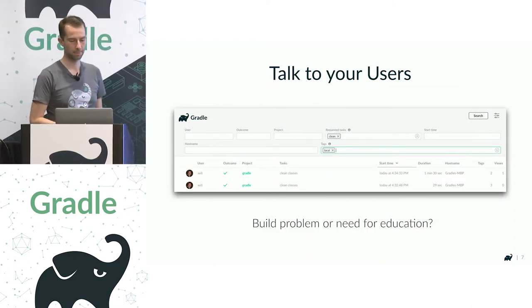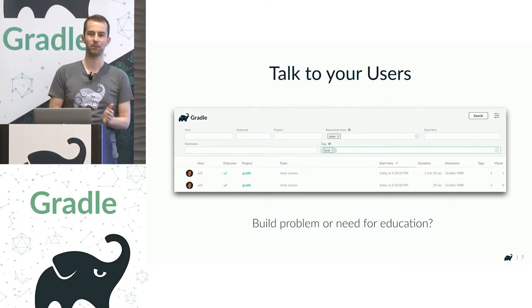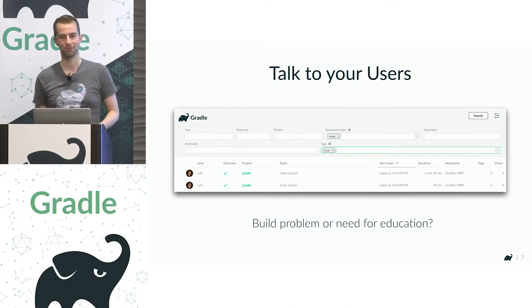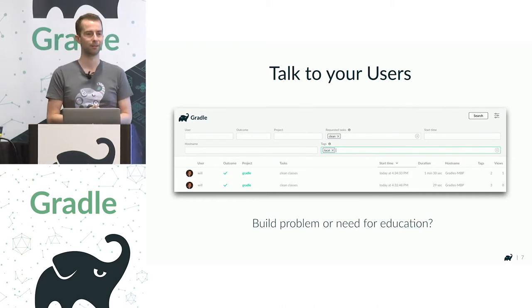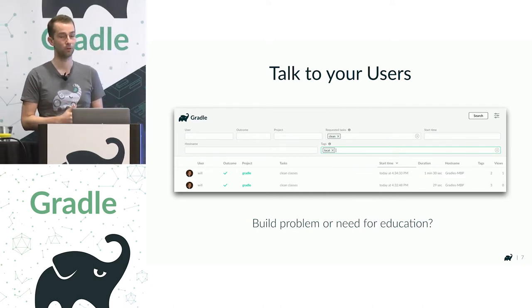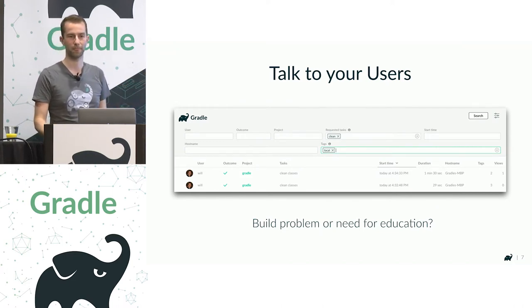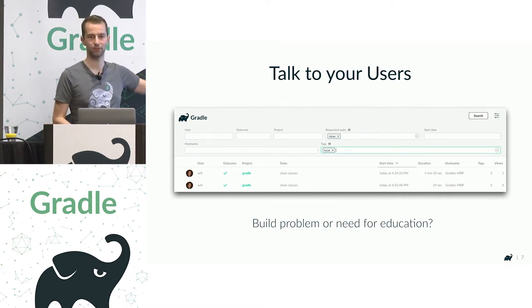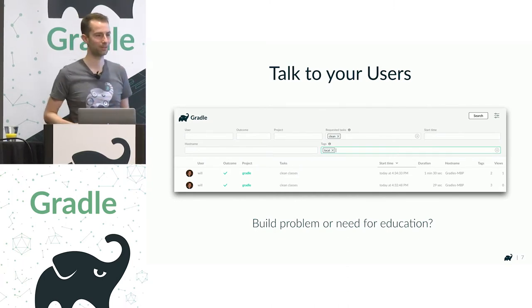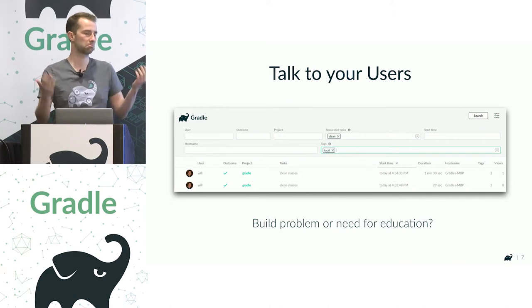With Gradle Enterprise, you can see that your colleague Will is calling gradle clean. Why is he doing that? Is it an education problem — maybe he just doesn't know that Gradle has really cool incremental build support and you don't need to call clean? This is not Maven. Or maybe there's actually a broken task that doesn't behave well on incremental builds, and Will is working around that problem by calling clean all the time. Without this data, you wouldn't know this problem existed unless Will actively communicates it. A lot of the time developers will just accept the pain.